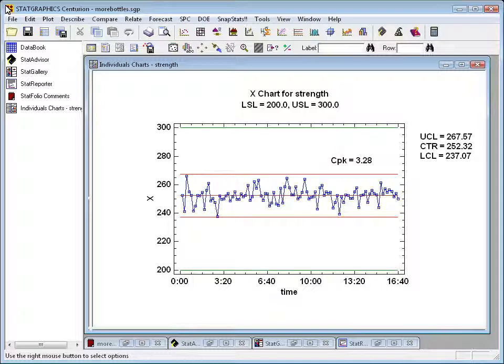The specification on strength is actually 200 to 300. That's how I've scaled the vertical axis to cover the entire width of the specification limits. You can see that the process doesn't use a great amount of the tolerance here. In fact, if you computed CPK, it turns out the CPK in this case is 3.28.